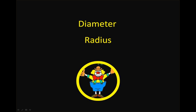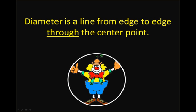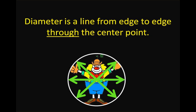We're also going to look at diameter and radius. The diameter is a line from one edge to the next, from edge to edge, through the center point — and that's key, it has to go through the center point. If we draw a line from one edge to the other through the clown's stomach, through the center point, that gives us our diameter. And if we draw another line and another line, as long as we always go through the center point, the diameter will always be the same.